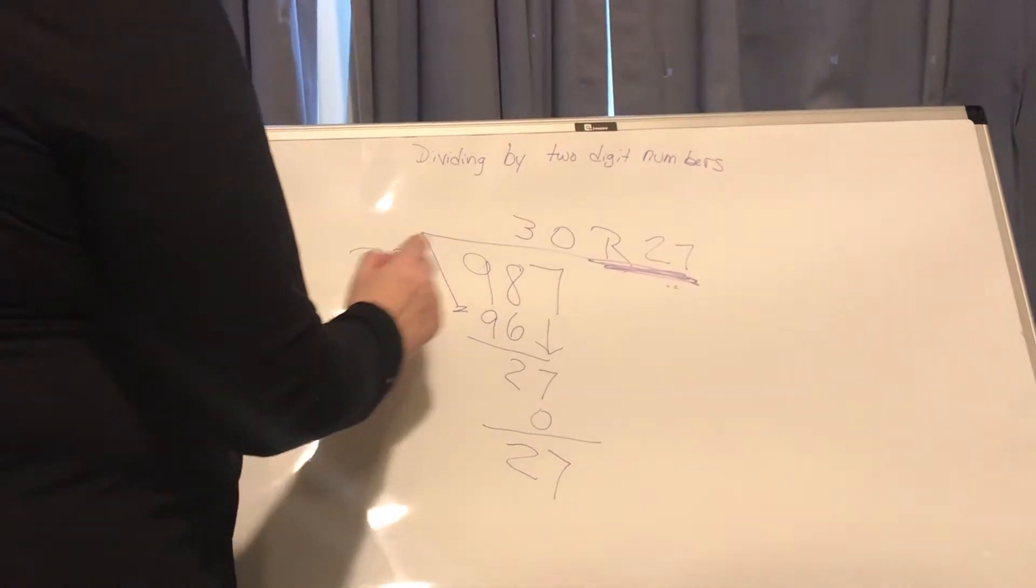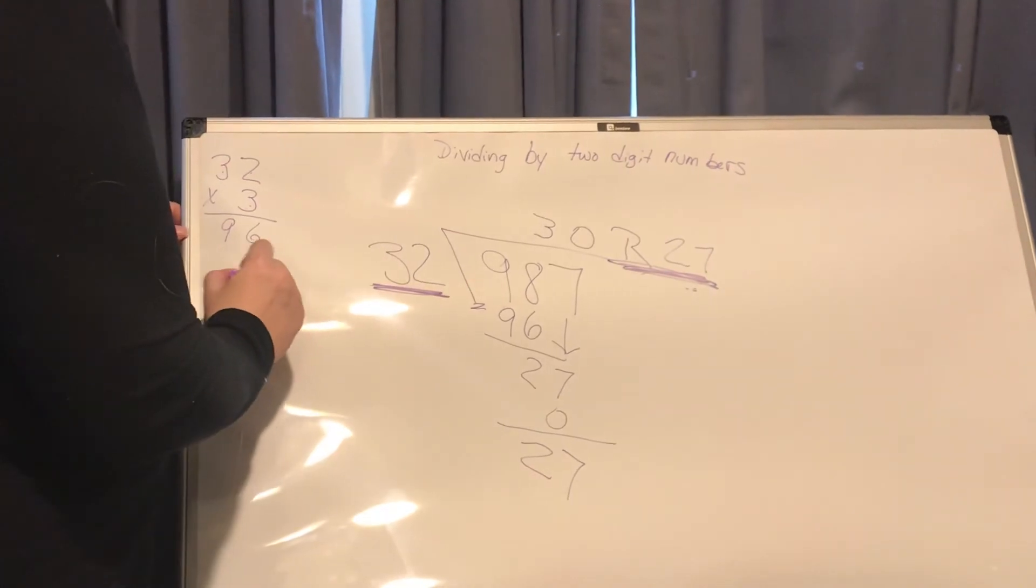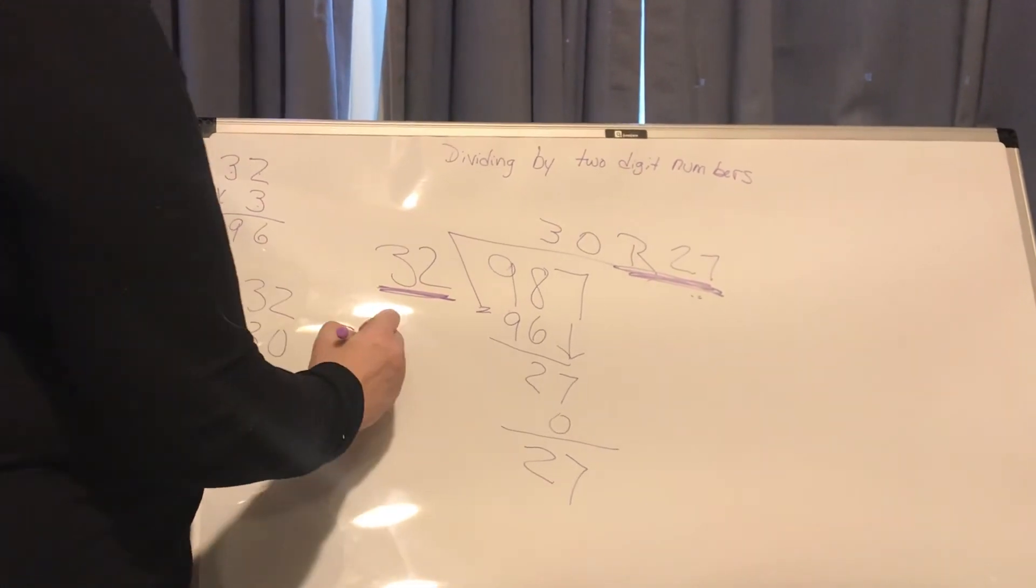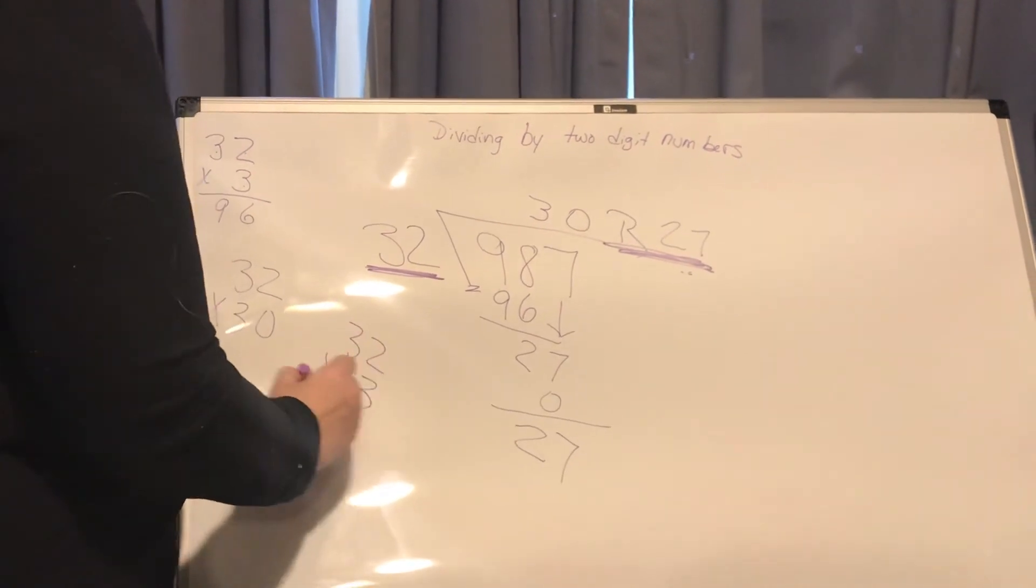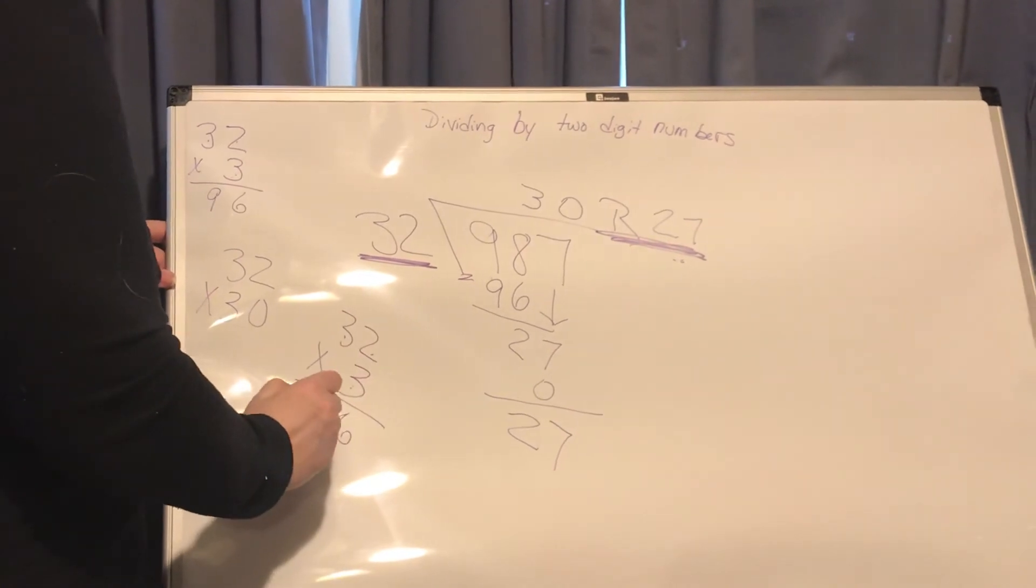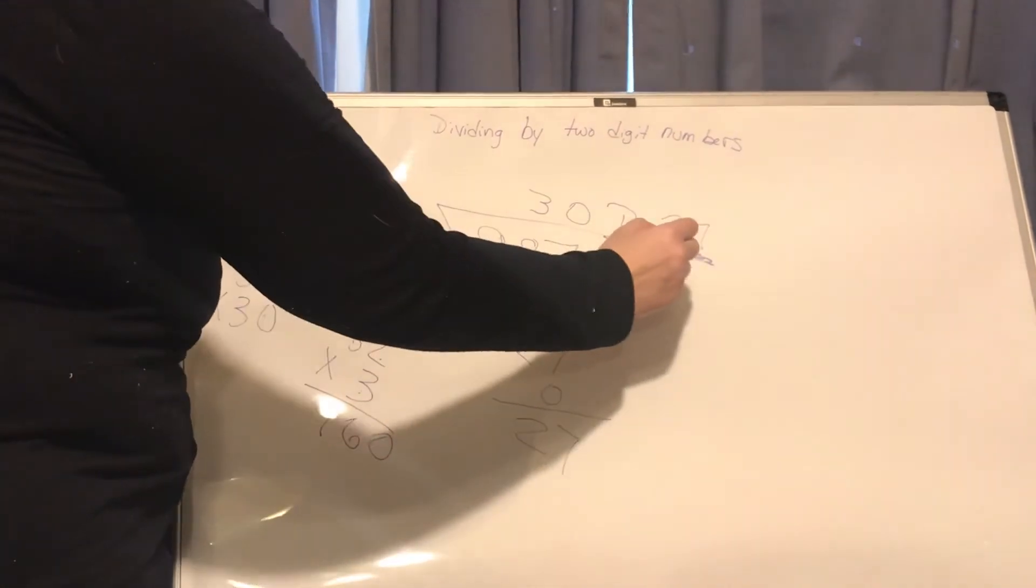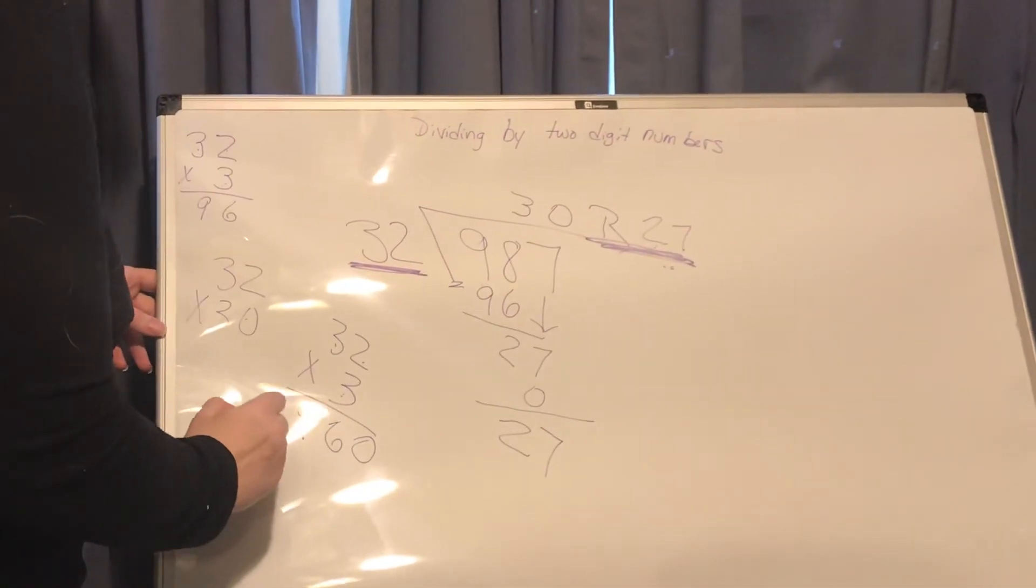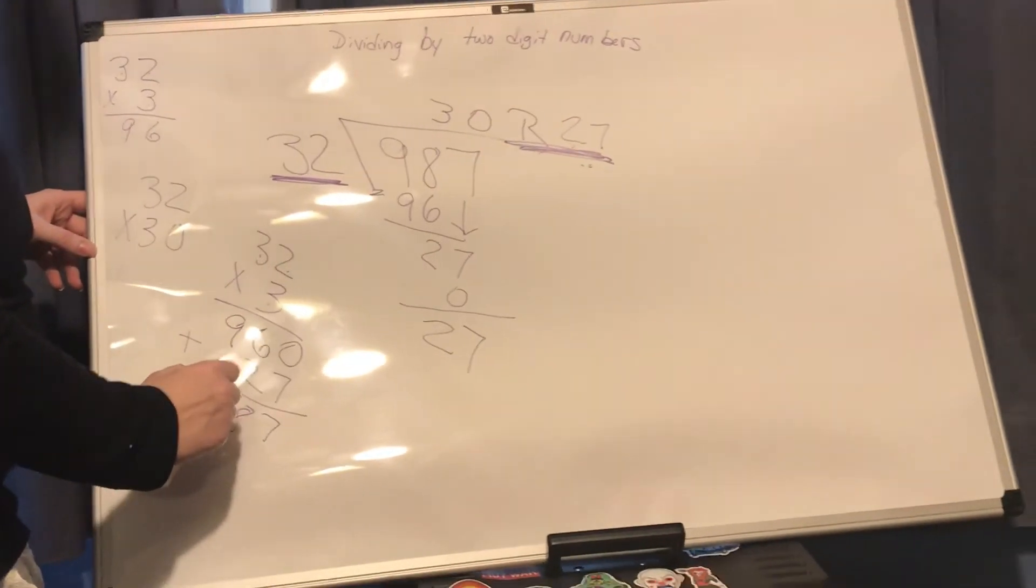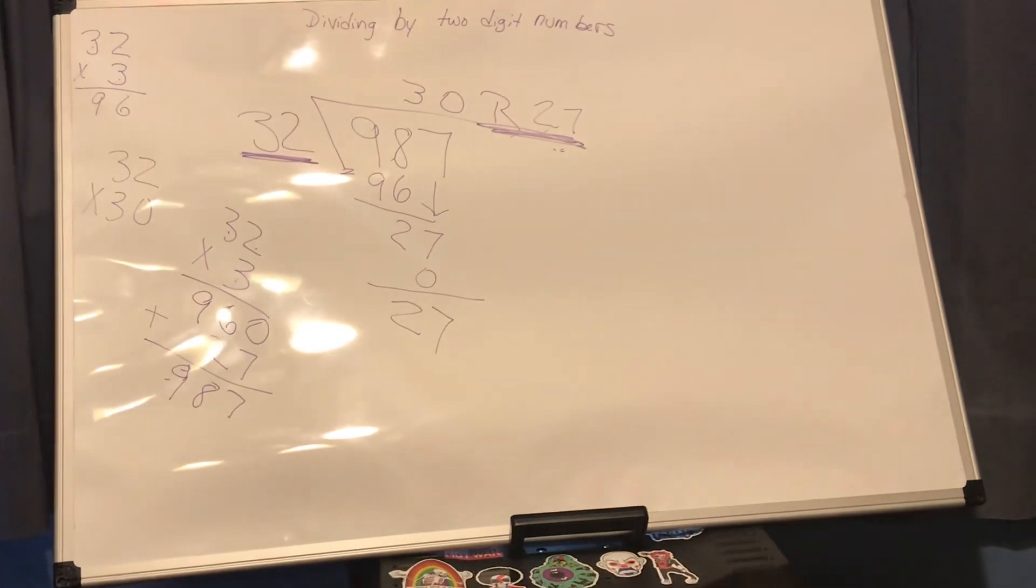But let's go ahead and do a check to see if we did our math right this time. So I have 32 times 30. Well, what I'm going to do is 32 times 3. 3 times 2 is 6, 3 times 3 is 9. And I'm going to add in that 0, and now I'm going to add in my remainder. 27, 987, which matches the dividend.